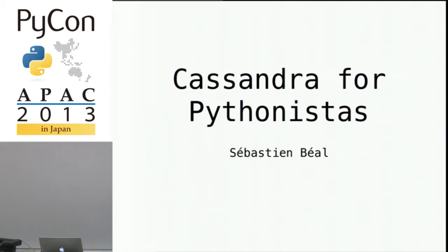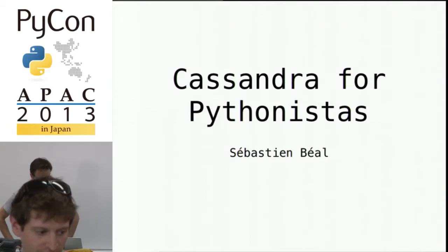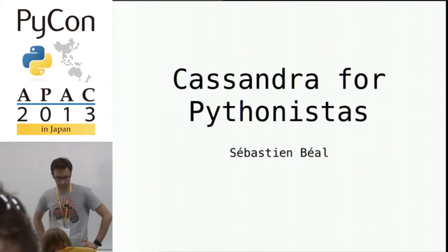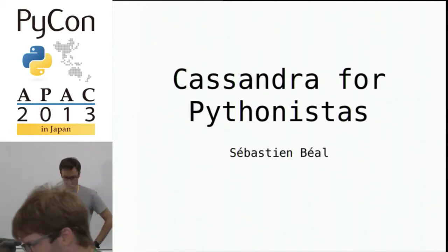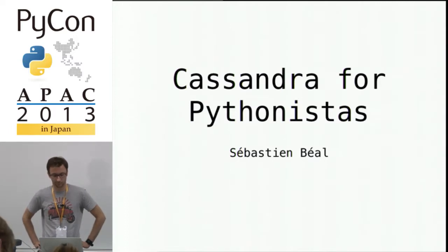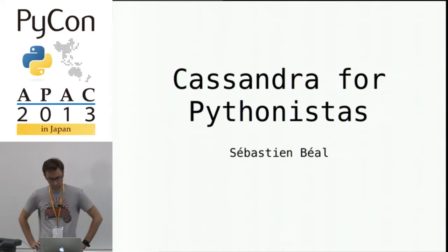Alright, good afternoon everybody, let's go ahead and begin the session. I'd like to introduce Sebastian Bale. Sebastian is the CEO and co-founder of Localize, a Japanese startup building an analytics service for brick and mortar stores. He is working with Python for the past six years with a focus on REST and real-time APIs, machine learning, and connecting things to the internet.